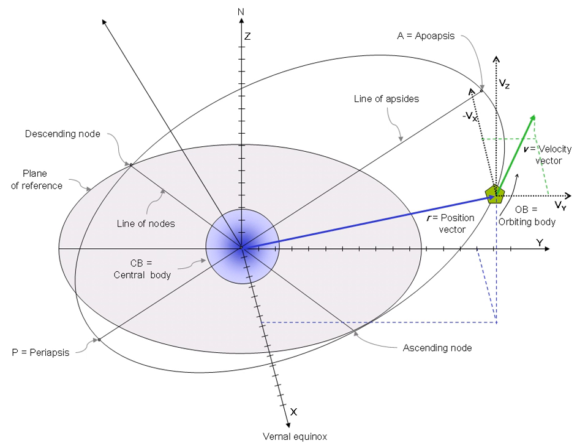The state vectors r and v can be easily used to compute the angular momentum vector as h equals r times v.